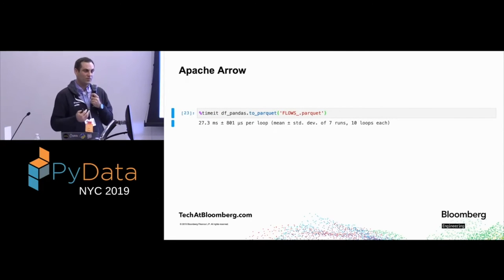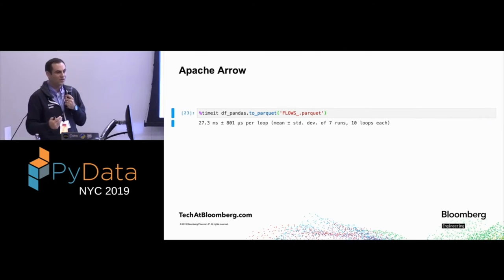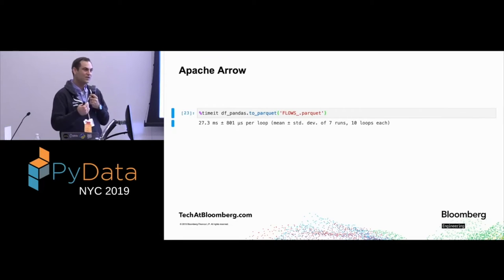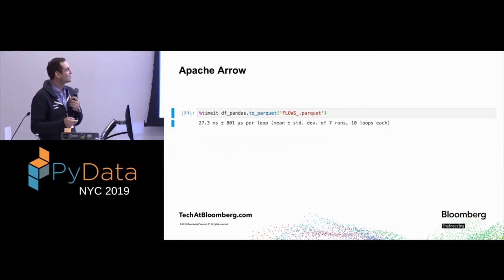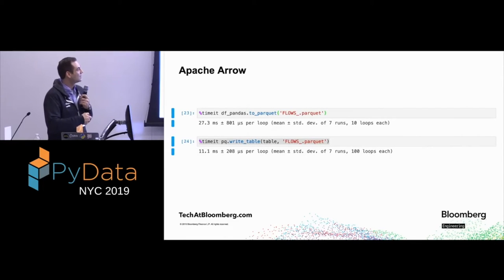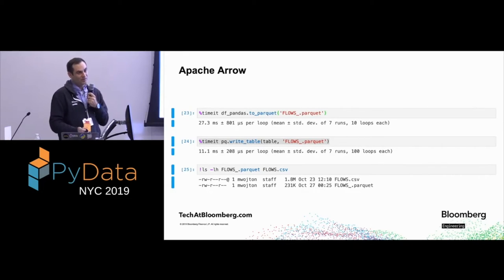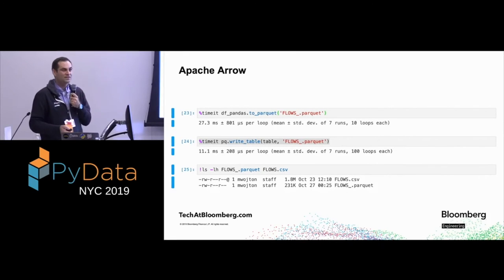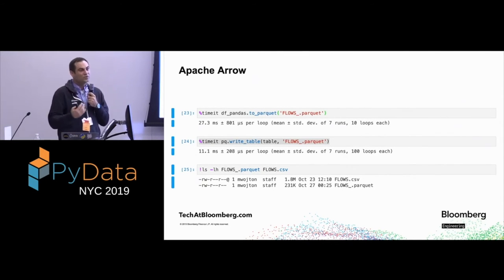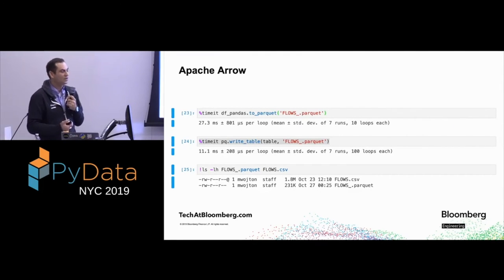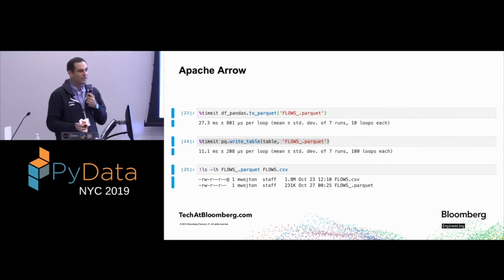If we first store in Apache Arrow and then write to Parquet — even though underneath Pandas also uses the Apache Arrow engine — writing the Parquet file using the table directly gives about a three-times speed improvement. The reason to use Parquet is it takes less space on disk: about 2 MB goes down to about a quarter MB. You don't lose any data because Parquet encodes all your strings — that's where the huge storage reduction comes from.